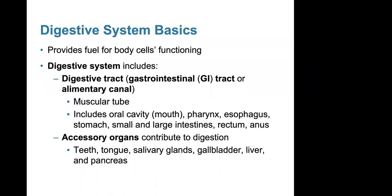Some basics of the digestive system: this is a system responsible for providing fuel for the body cells' functioning. The digestive system includes the digestive tract, more commonly called the gastrointestinal tract, GI tract, or alimentary canal — these terms are all used interchangeably. The GI tract is a muscular tube and includes the oral cavity, pharynx, esophagus, stomach, small and large intestines, rectum, and anus.